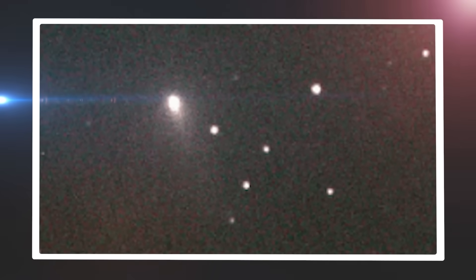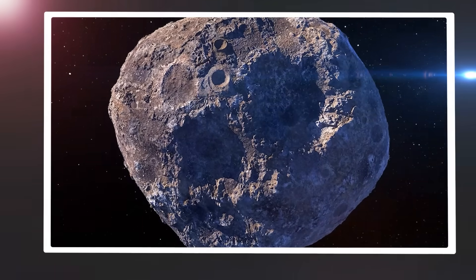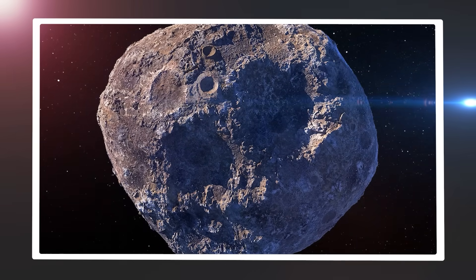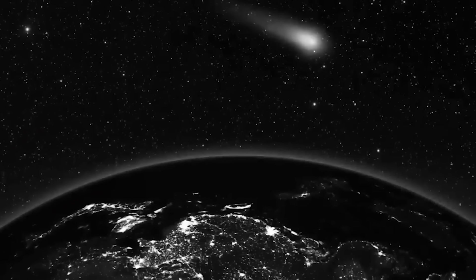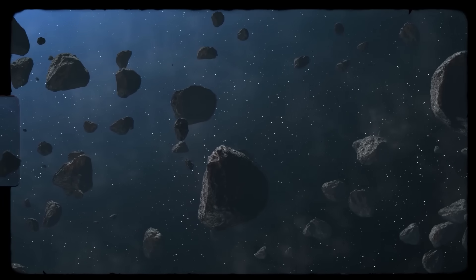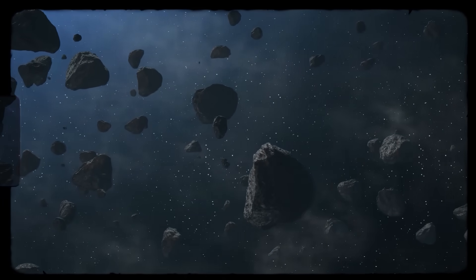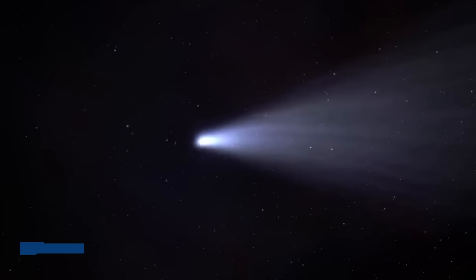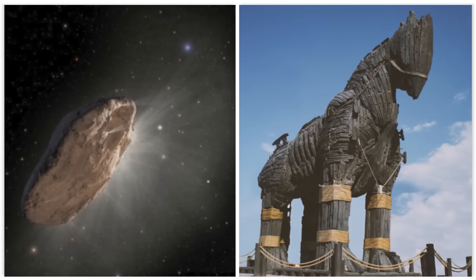A core that wasn't a solid, potato-shaped nucleus, but something structured. Something artificial. The object was huge, estimated to be over 300,000 feet in diameter. A city-sized structure cloaked in ice and dust. And it was moving at over 60,000 miles per hour. This wasn't a comet. It was a Trojan horse.